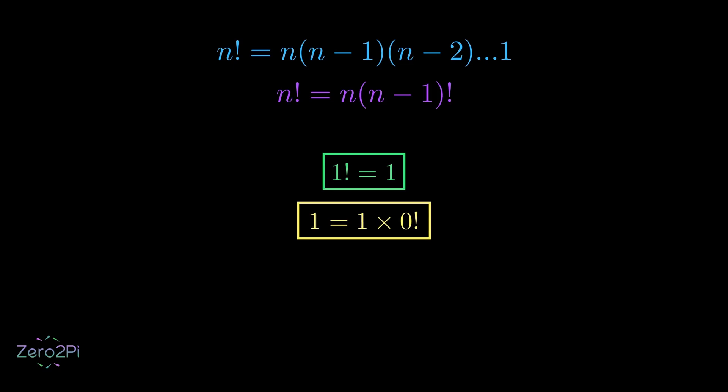And mathematically, any number multiplied by 1 is the number itself. So, let's just write this as 0 factorial. There we go. That proves 0 factorial is equal to 1.